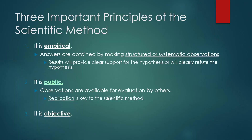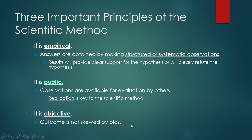The third principle is that it's objective. We don't want the outcome to be skewed by any type of bias. We'll talk later about how we can avoid bias by selecting our sample in certain ways, and by distributing that sample into different groups in different ways. There can't be any bias or subjectivity in the scientific method.